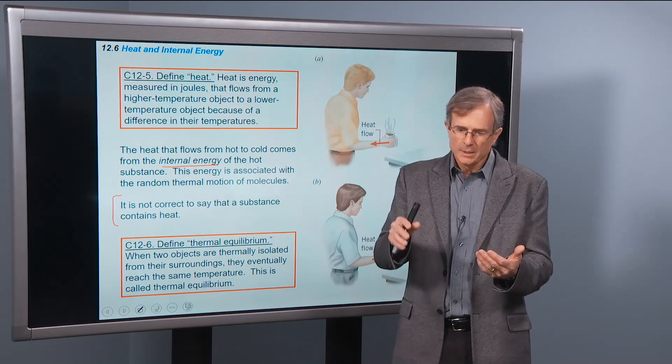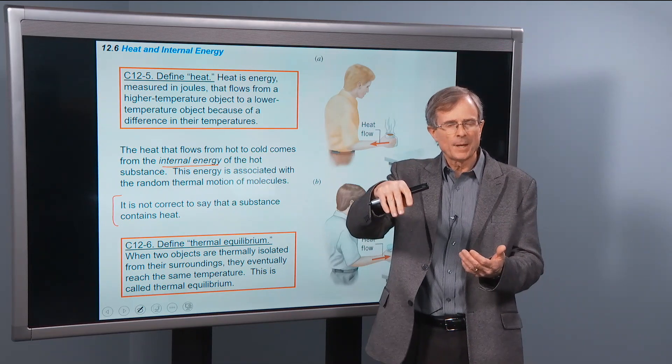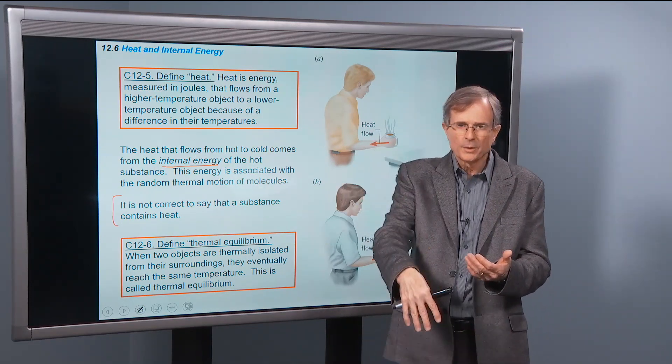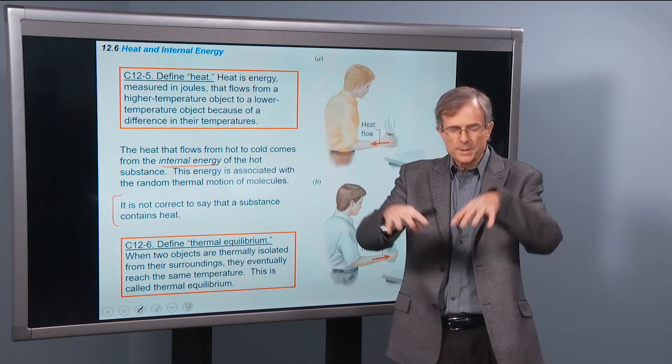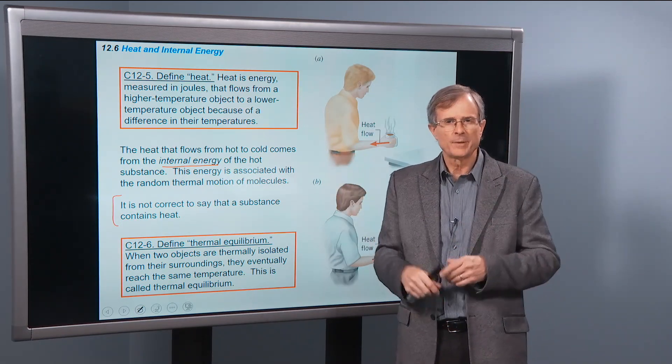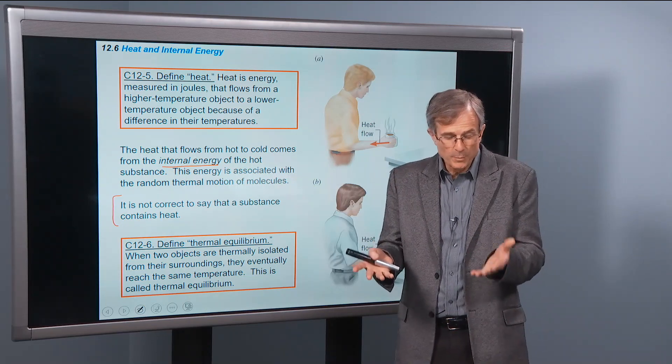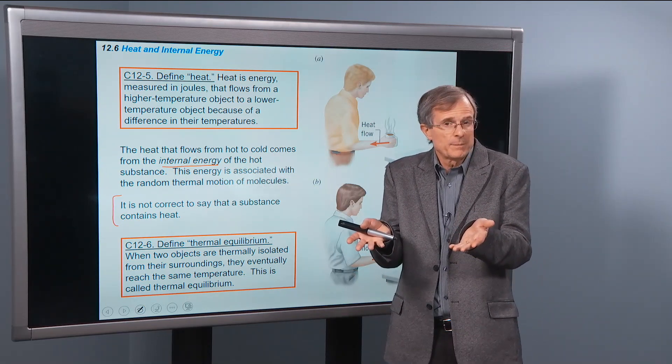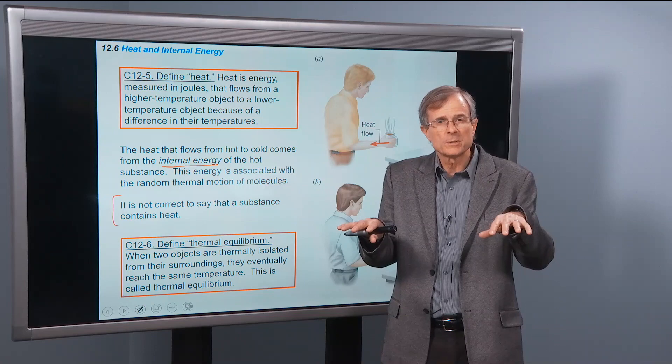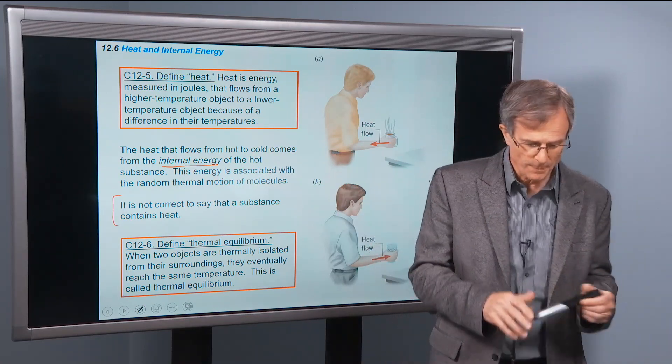Eventually the heat from that hot pan is going to go into the cooling rack, or into the air, and eventually the temperature of that pan will reach room temperature. And the room temperature may come up just a little bit to match it. But once those temperatures are matched, that's called thermal equilibrium.